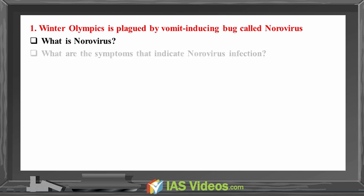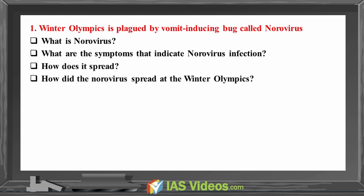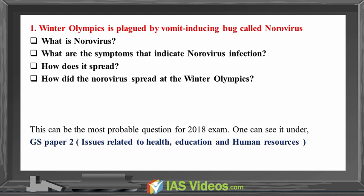This video addresses key questions: What is a norovirus? What are the symptoms that indicate norovirus infection? How does it spread? How did the norovirus spread at the Winter Olympics? This can be the most probable question of the 2018 exam, and can be seen under GS Paper 2, Issues Related to Health, Education and Human Resources.